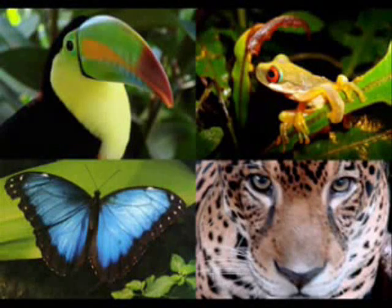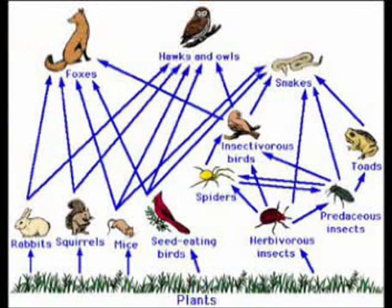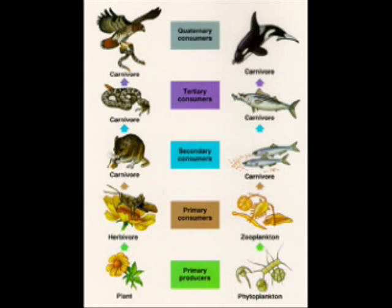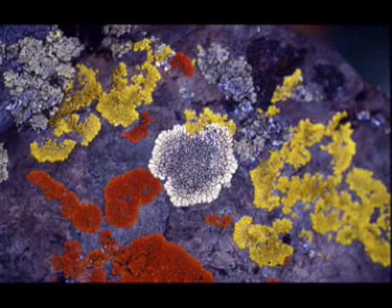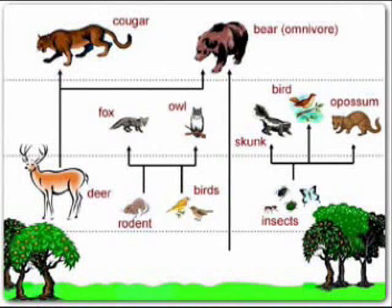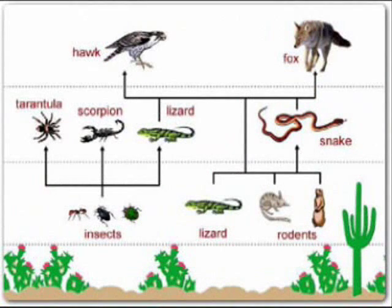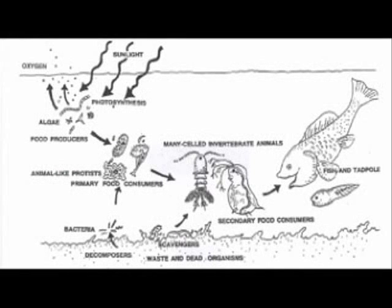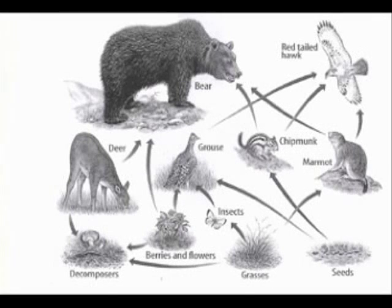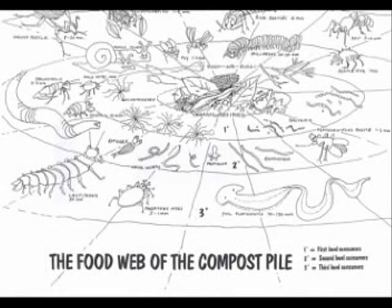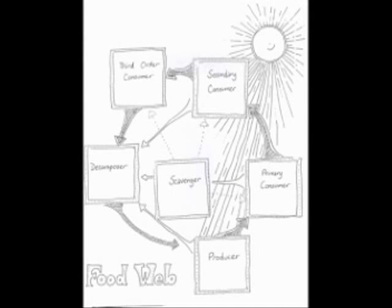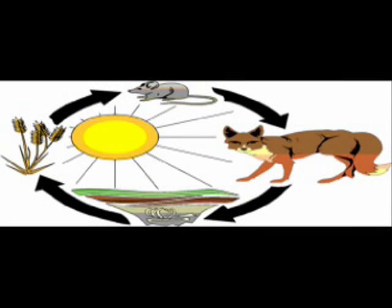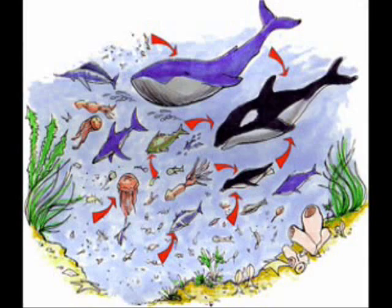Of the energy transferred from the herbivore to the carnivore, some energy will be wasted or used up by the carnivore. The carnivore then has to eat many herbivores to get enough energy to grow. Because of the large amount of energy that is lost at each link, the amount of energy that is transferred gets lesser and lesser. The further along the food chain you go, the less food and hence the less energy remains available.